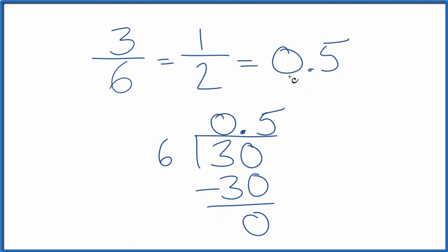And you can check your work. 0.5 times two, that gives you one. 0.5 times six, that gives you three.